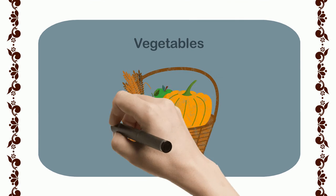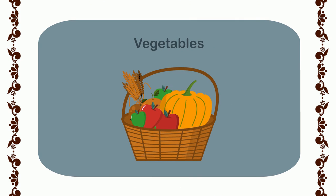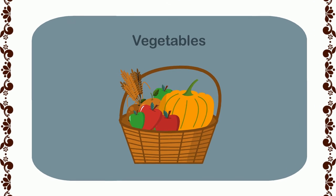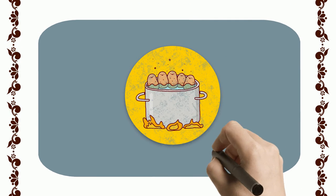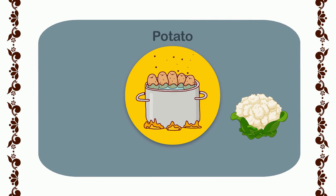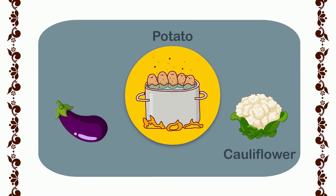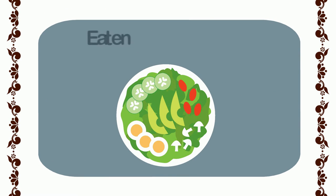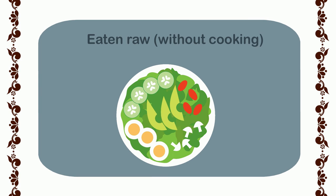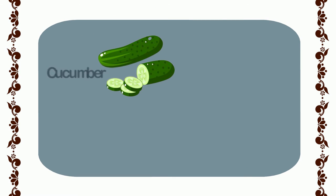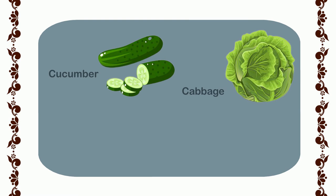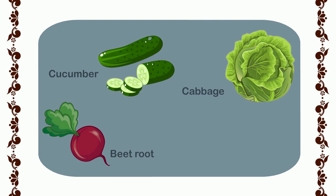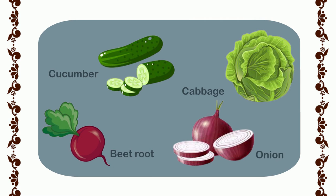Vegetables are also a type of fruit which we usually eat after cooking, such as potato, cauliflower, and eggplant. However, some vegetables can also be eaten raw without cooking, such as cucumber, cabbage, beetroot, and onion, which we often use in salads.